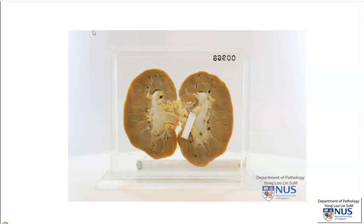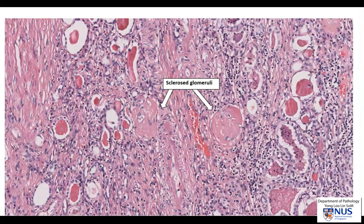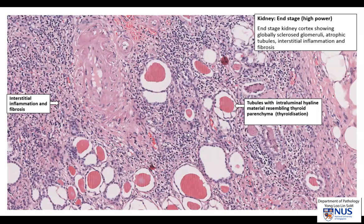What would we see microscopically? In the renal cortex, many of the glomeruli are actually sclerosed and are just replaced by pink hyaline material. You no longer appreciate the individual glomerular capillary loops. In the medulla, the tubules are also atrophic. Sometimes we call this thyroidization, because they actually look like thyroid follicles with this pink proteinaceous material that resembles colloid.